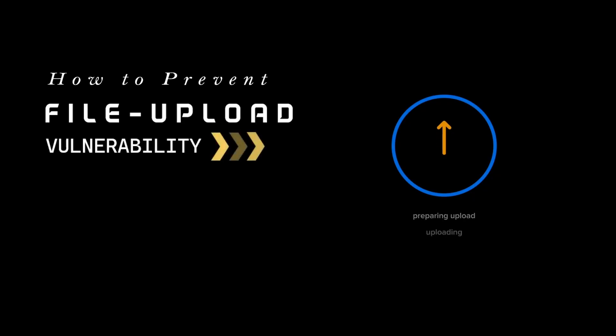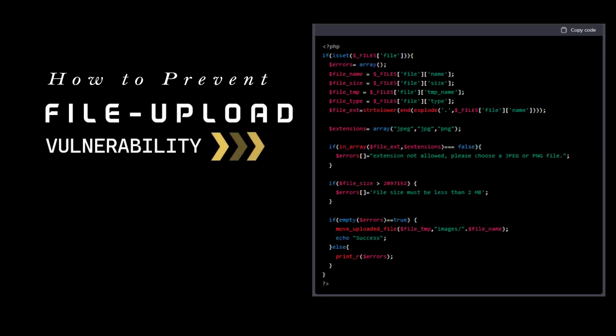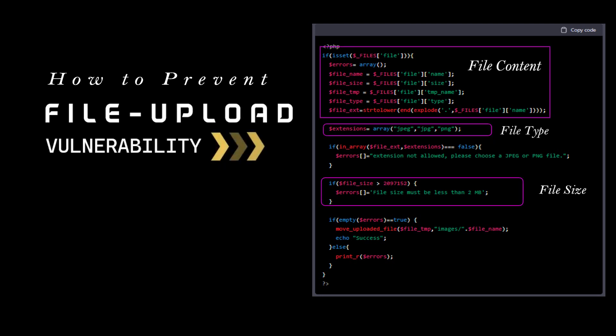To prevent file upload vulnerabilities, it is important to properly validate the file type, size, and content of any file that is uploaded to the server. This can help to ensure that only safe files are allowed to be uploaded and executed on the server. If you have any doubts or queries related to this video, mention them in the comment section.